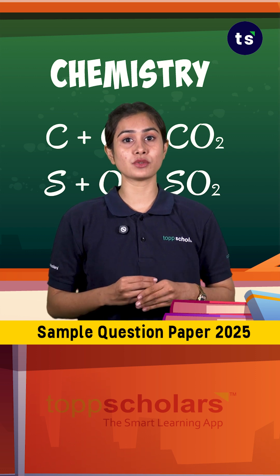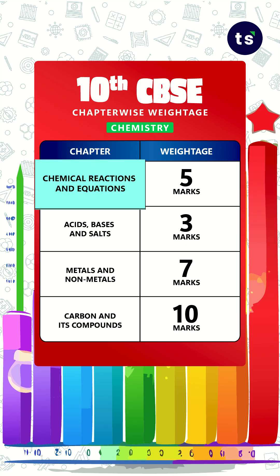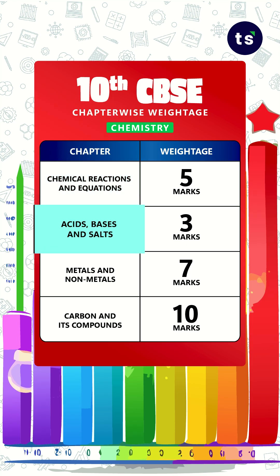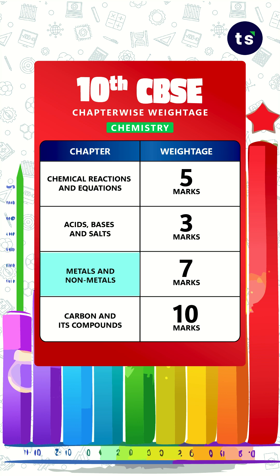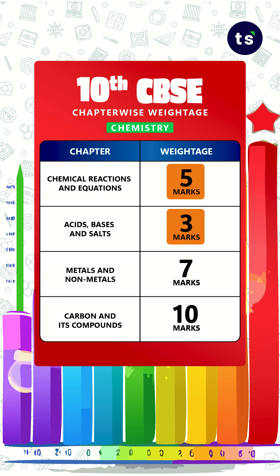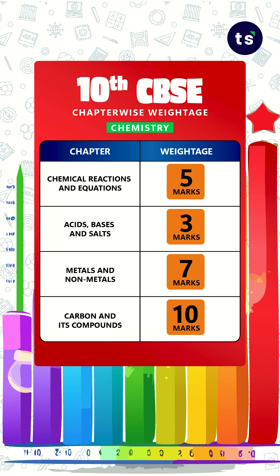Four chapters of chemistry — chemical reactions, acids bases and salts, metals and non-metals, and carbon and its compounds — have five, three, seven, and ten marks respectively.